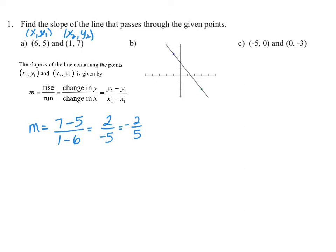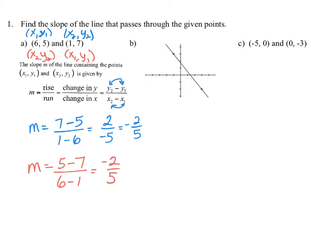This formula can be reversed as long as you reverse both points consistently. If we swap so the first point becomes (x₂, y₂) and the second becomes (x₁, y₁), we get y₂ = 5 minus 7 divided by x₂ = 6 minus 1, which simplifies to negative 2 over 5 — the same slope. So the order doesn't matter as long as you're consistent with the first and second points.